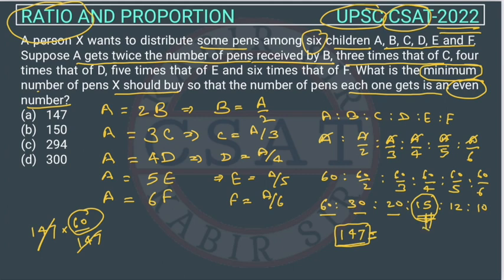So what should we do? 147 won't be the answer. So the multiple of 147 multiplied by 2, it will be 294, because 60 will get converted into 120, 15 will get converted into 30. So all these numbers will be in even numbers.